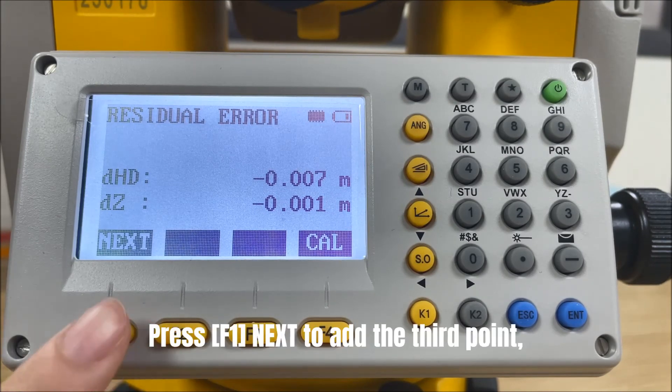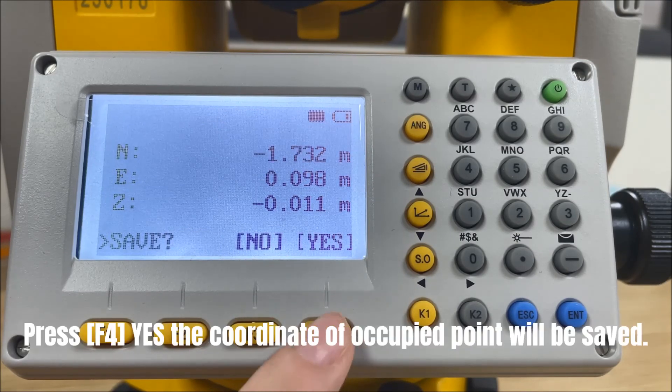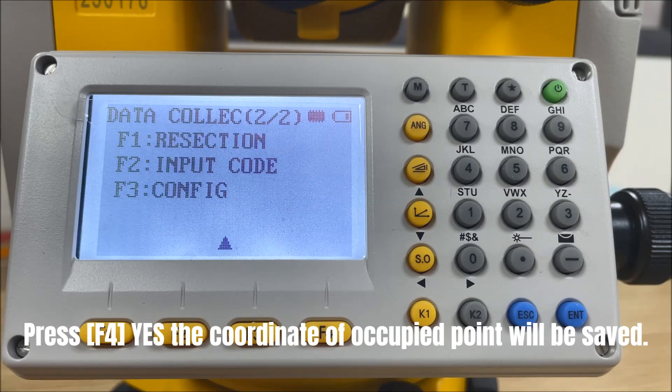Press F1 next to add the third point, or press F4 to calculate the coordinate of station. Press F4, the coordinate of occupied point will be saved.